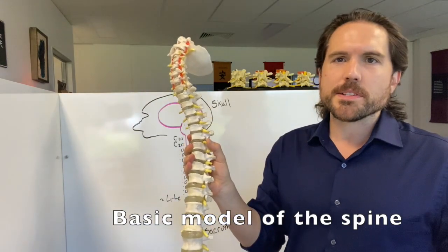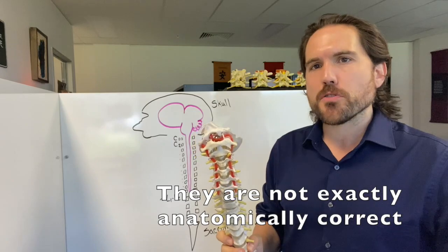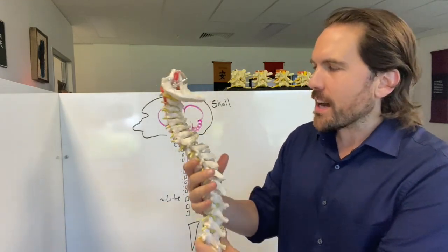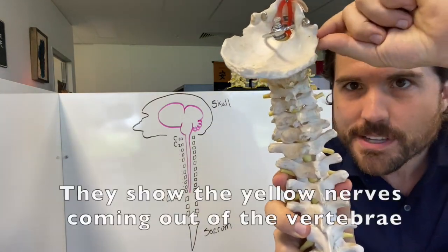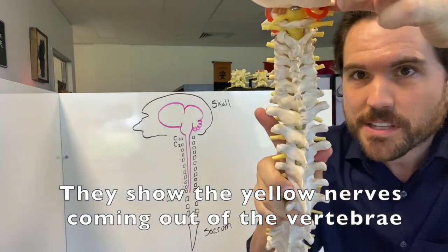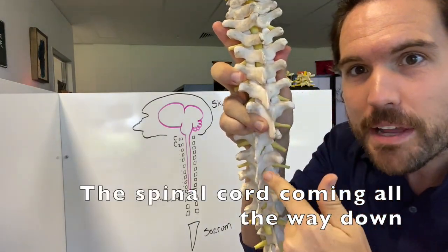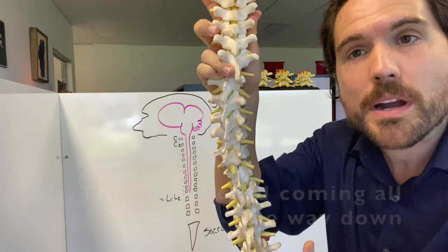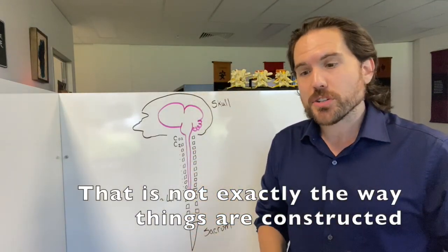And one of the things with these models of the spine, yeah, they're useful for teaching purposes, but they're not exactly anatomically correct. And so I want to highlight that what so many of them show is if we get in there nice and close, you might be able to see all these yellow nerves coming out of the spaces between the vertebra. And then you'd see that we have in between all of that, we have a spinal cord coming all of the way down. Well, that is not exactly the way that things are actually constructed.